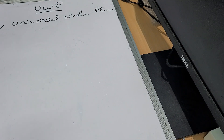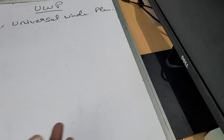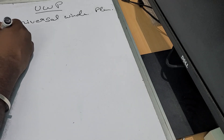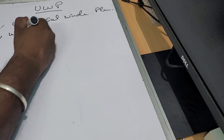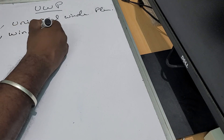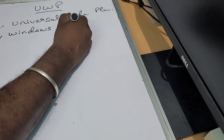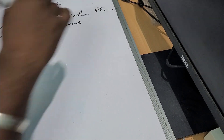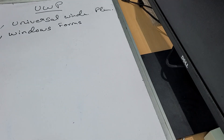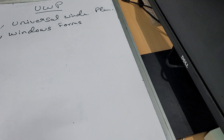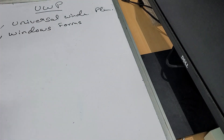If you want to talk about what machine is run, that machine runs the application. A Windows application is advanced in the Universal Windows Platform. If you want to talk about Windows Forms — Windows Forms is a framework where maximum desktop applications can be developed.